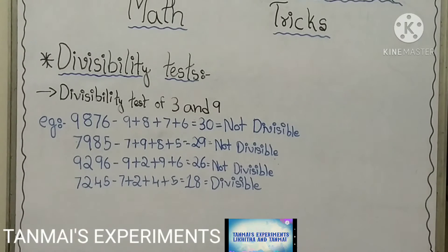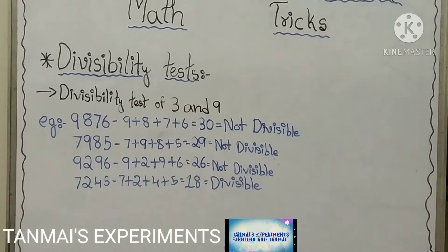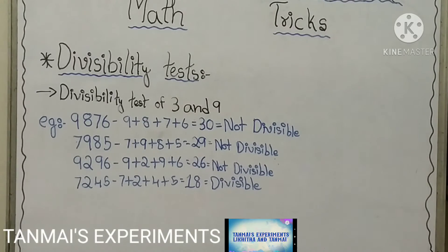The next example is 9,296. 9 plus 2 plus 9 plus 6 equals 26, and 26 is not divisible by 9, hence 9,296 is not divisible by 9. The next example is 7,245. 7 plus 2 plus 4 plus 5 equals 18. 18 is divisible by 9, hence the whole number 7,245 is divisible by 9.